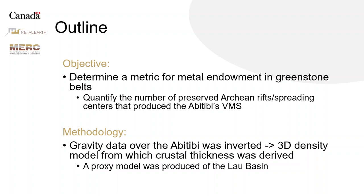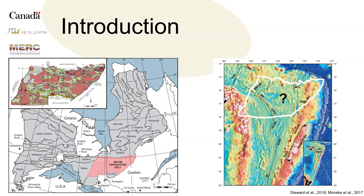Looking to do this by modeling gravity data — so producing 3D density models of the crust, and from that pulling out crustal thickness. I'll do the same in the Lau Basin as well as the Abitibi, using the Lau Basin as a proxy. The Lau Basin is important for this because we've already identified where the spreading centers are. By putting together 3D density models and seeing what characteristics these spreading centers have, when we do the same type of modeling in the Abitibi and see the same characteristics, we can then start to interpret them as potential spreading centers as well.